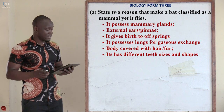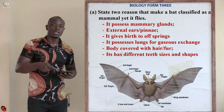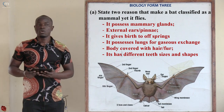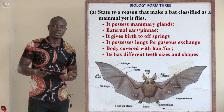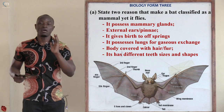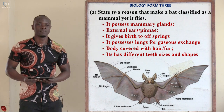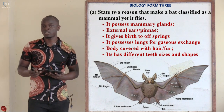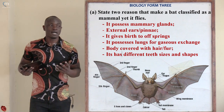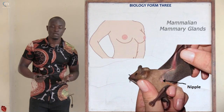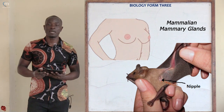Question number three asks: state two reasons that make a bat be classified as a mammal, yet it can fly. The bat is the only flying mammal. The first reason is that the bat has mammary glands used to feed its young ones. All mammals possess mammary glands, including the whale.